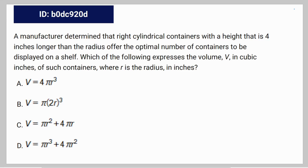So we have this geometry and trig question. A manufacturer determined that right cylindrical containers with a height that is 4 inches longer than the radius offers the optimal number of containers to be displayed on a shelf. Which of the following expresses the volume V in cubic inches of such containers, where r is the radius in inches?